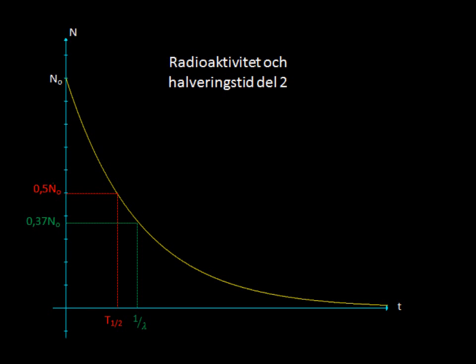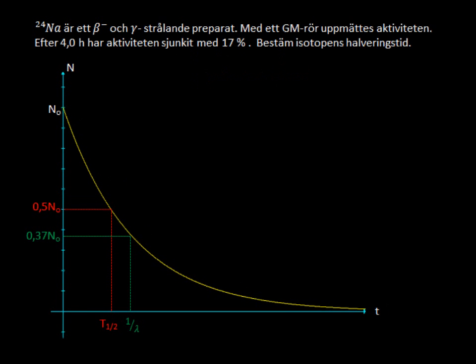So let's take a look at the problem and then we'll start analyzing it. We have an isotope of sodium and it gives off beta and gamma radiation. We have a Geiger counter that can detect the activity and we know that after four hours the activity has gone down by 17% and we're supposed to find the half-life of this particular isotope.